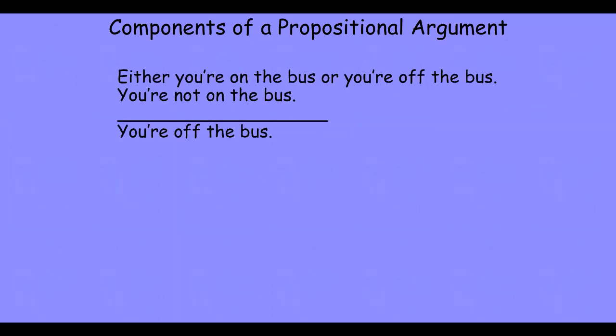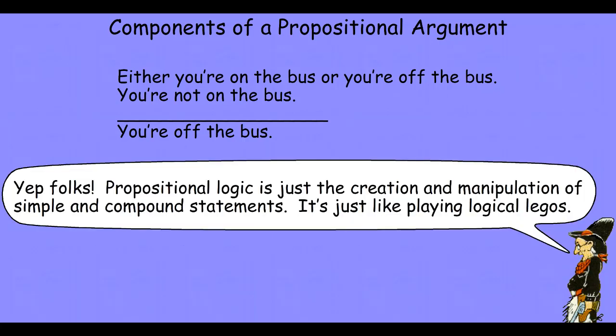Let's go back to that Casey argument. That argument has two components to it. It has some simple statements, and it has some compound statements. And as we'll see, our logic is just the creation and manipulation of simple and compound statements. We take a compound statement, we break it into a simple statement. We take a simple statement, we create a compound statement. So it's a lot like playing logical Legos, putting them together, taking them apart to create different kinds of structures.